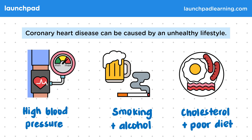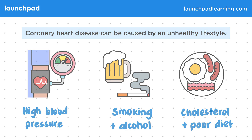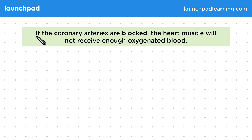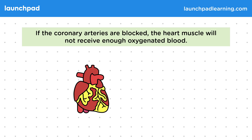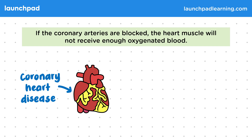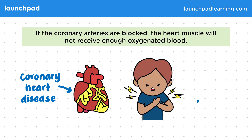Now let's look at the consequences of coronary heart disease. If the coronary arteries are blocked, the heart muscle will not receive enough oxygenated blood. This diagram shows roughly what a heart would look like with coronary heart disease. Somebody with a heart that looks like this could end up having a heart attack.